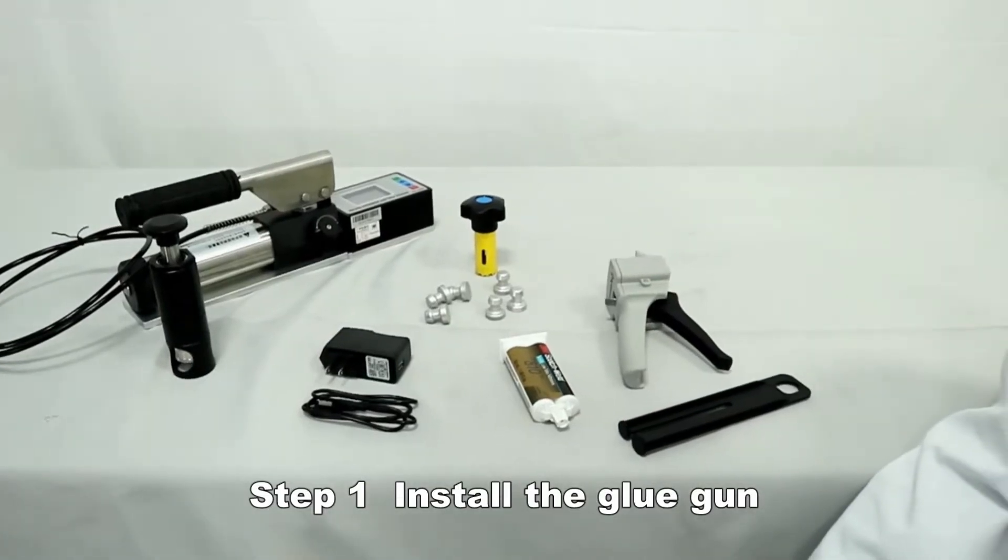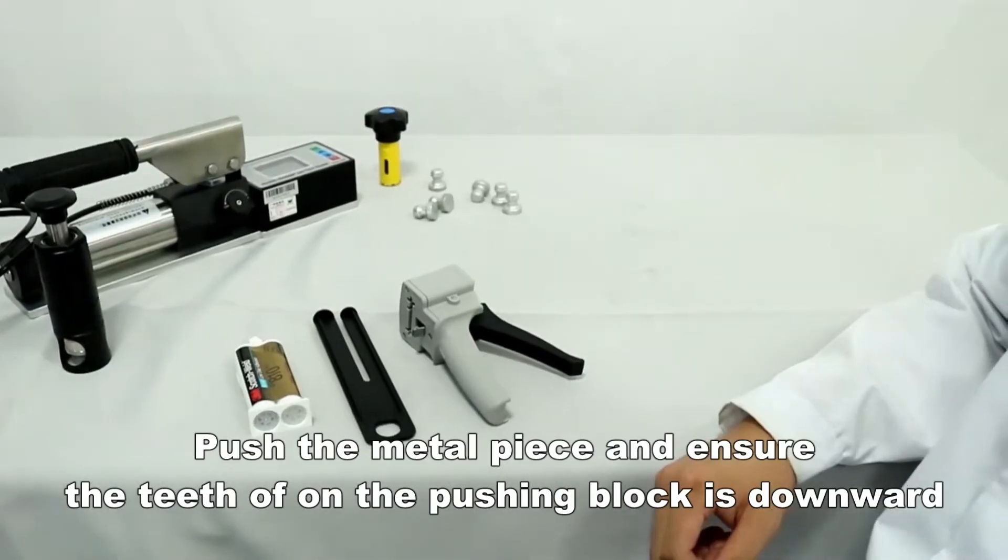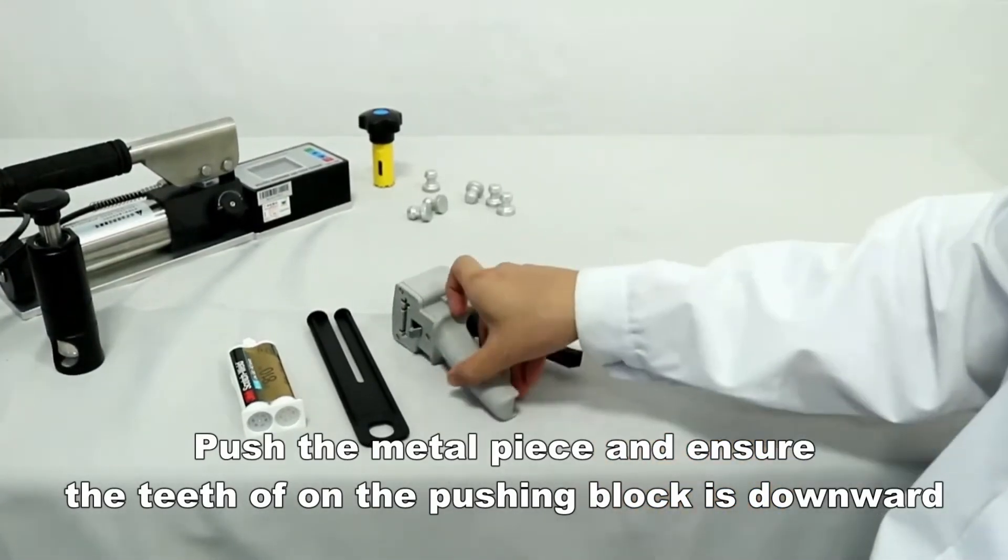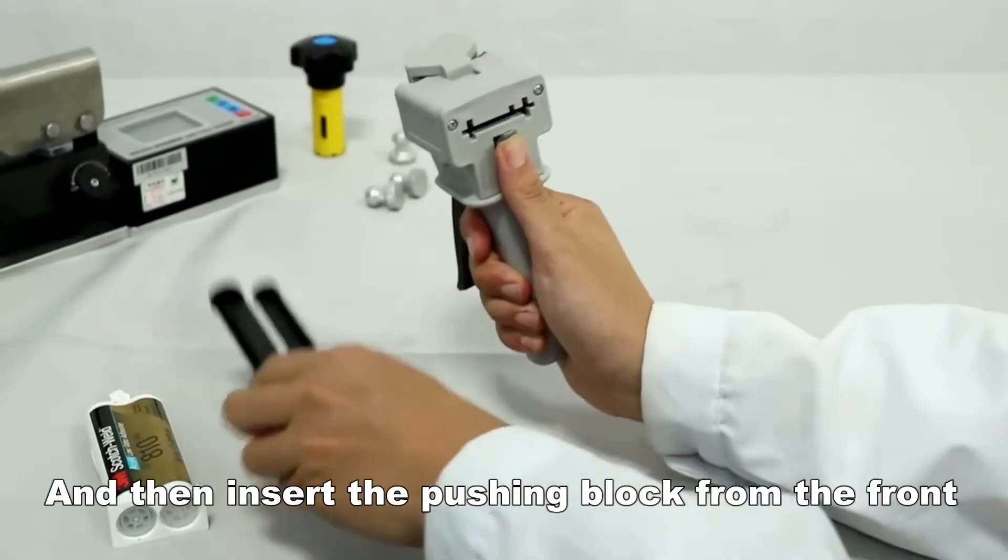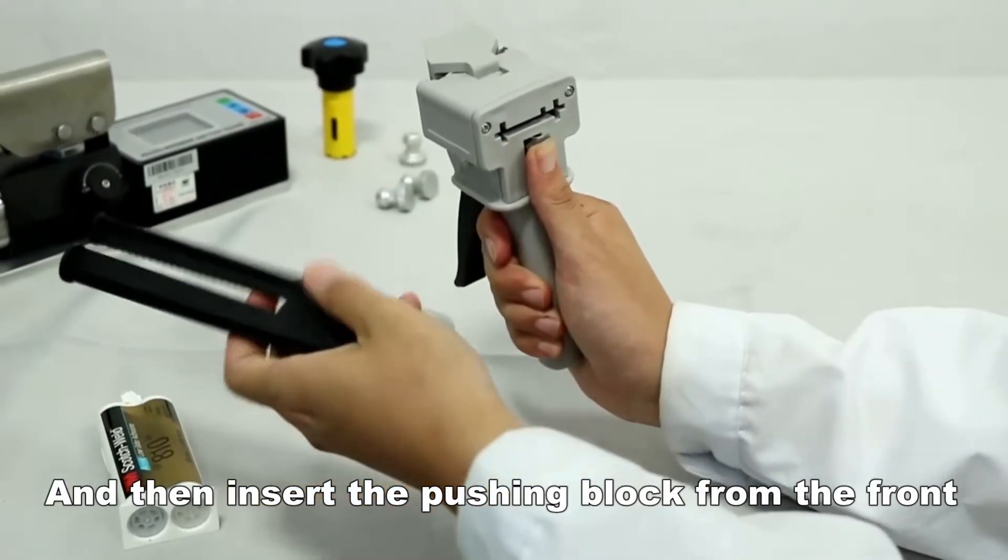Install the glue gun. Push the metal piece and ensure the teeth on the pushing block is downward. Then insert the pushing block from the front.